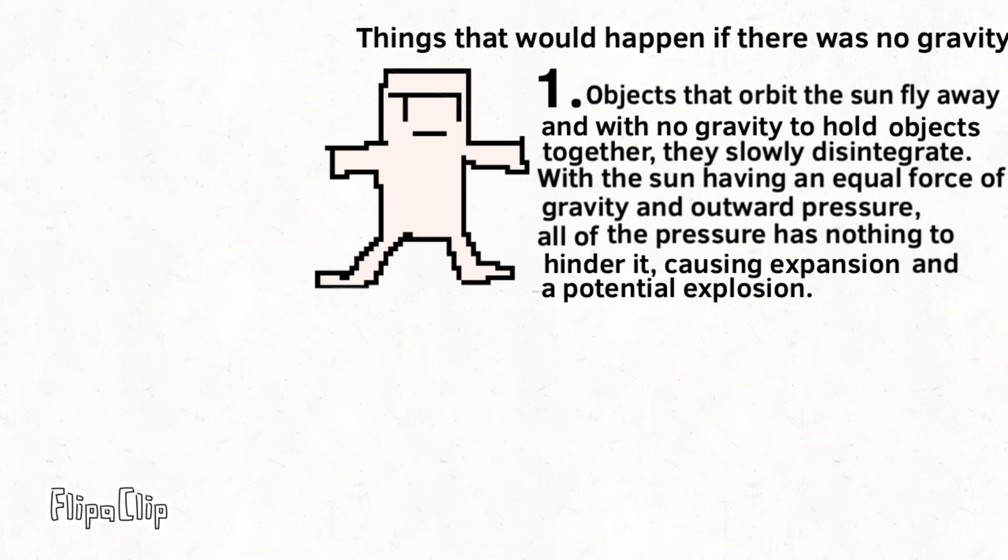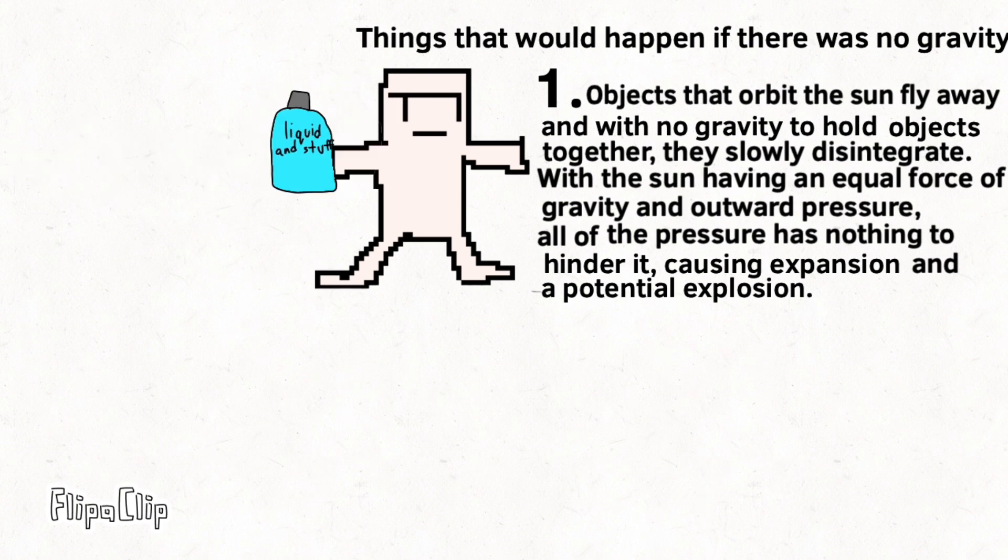Objects that orbit the Sun will fly away, and with no gravity to hold objects together, they will slowly disintegrate. With the Sun having an equal force of gravity and outward pressure to mold it into a sphere, all the pressure has nothing to hinder it, causing expansion and a potential explosion.